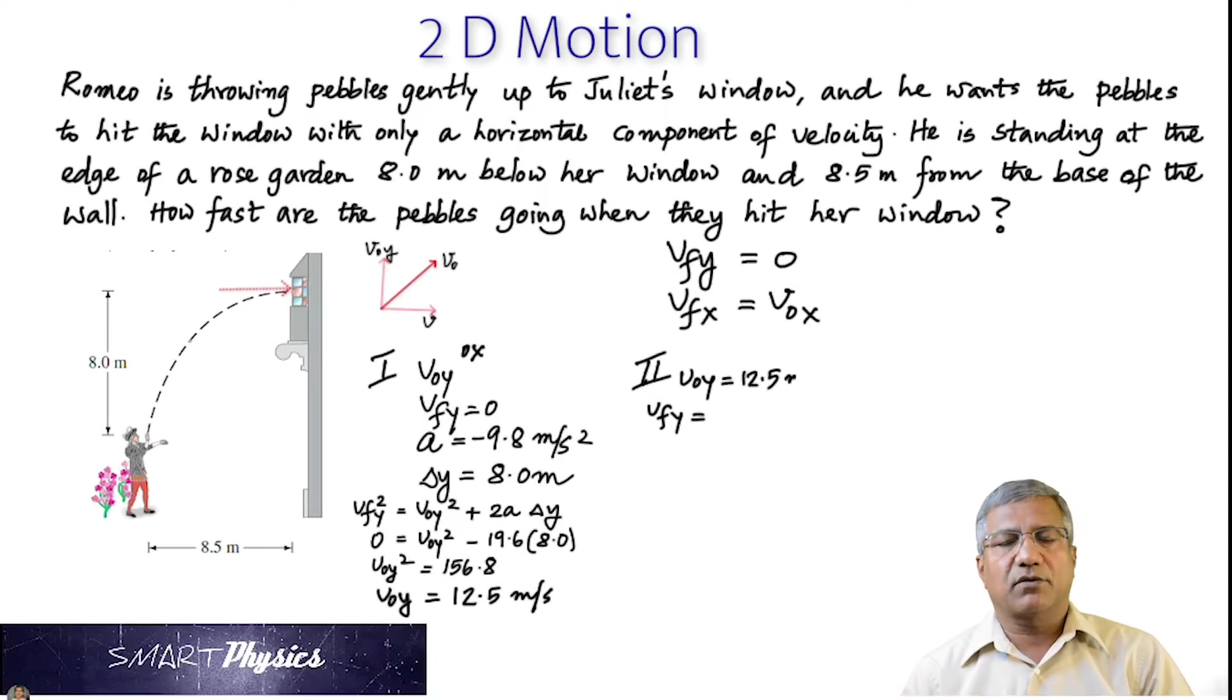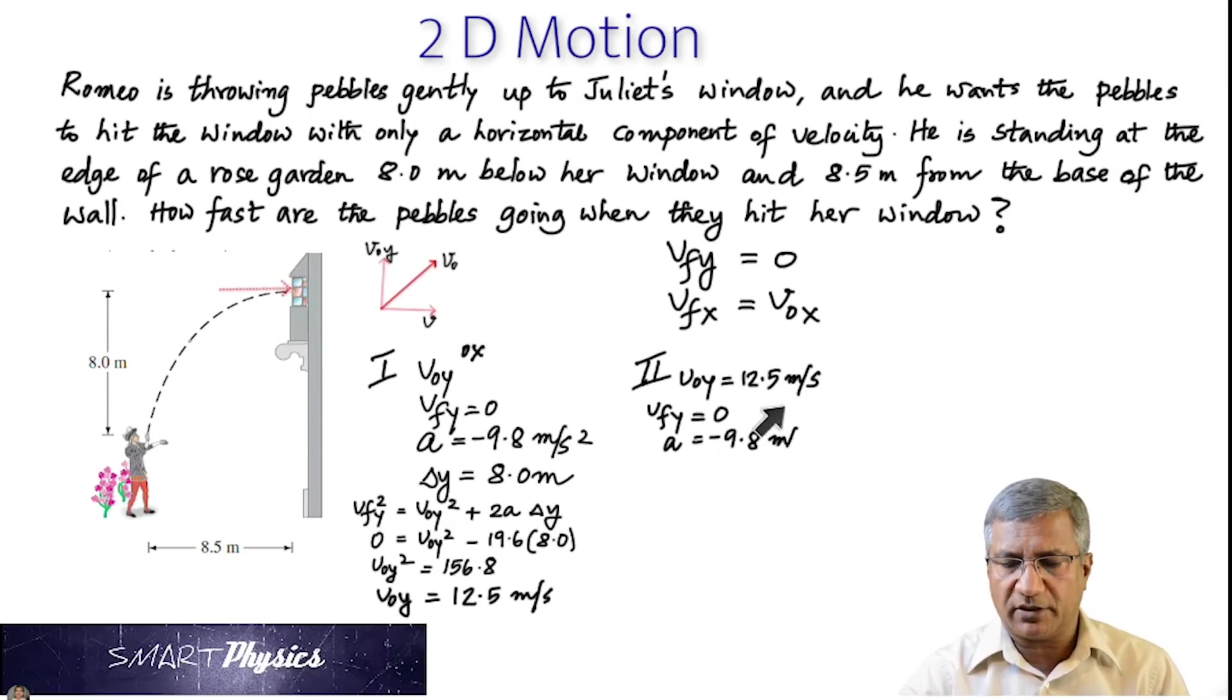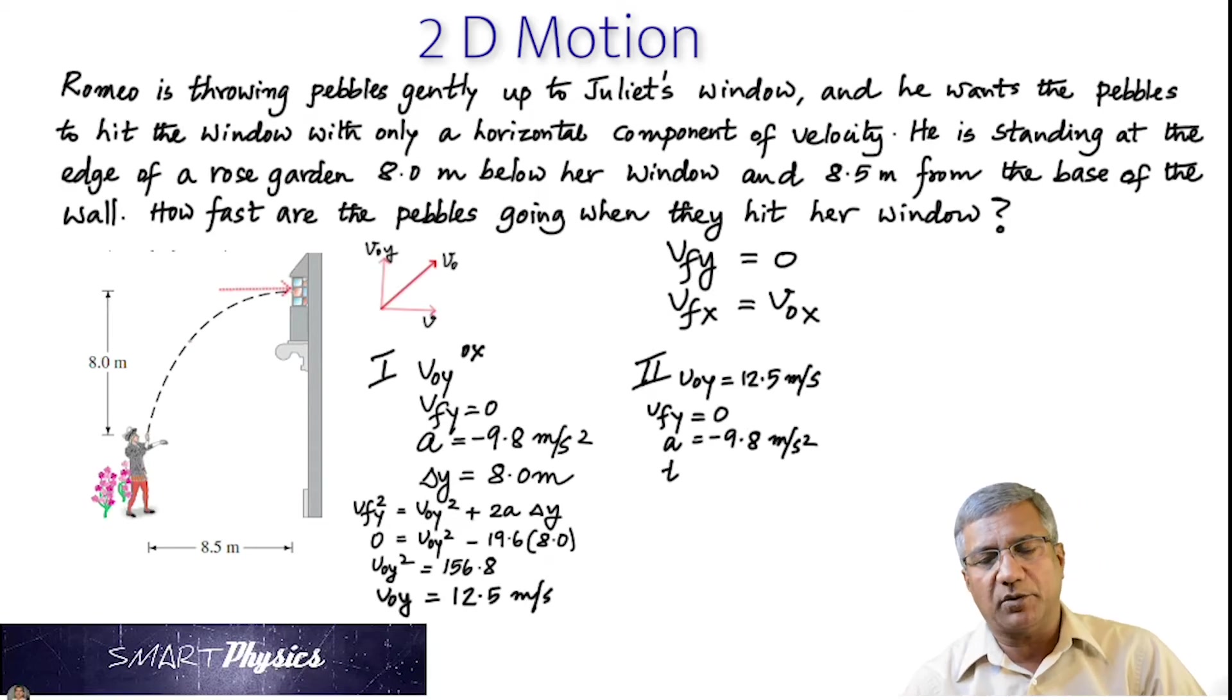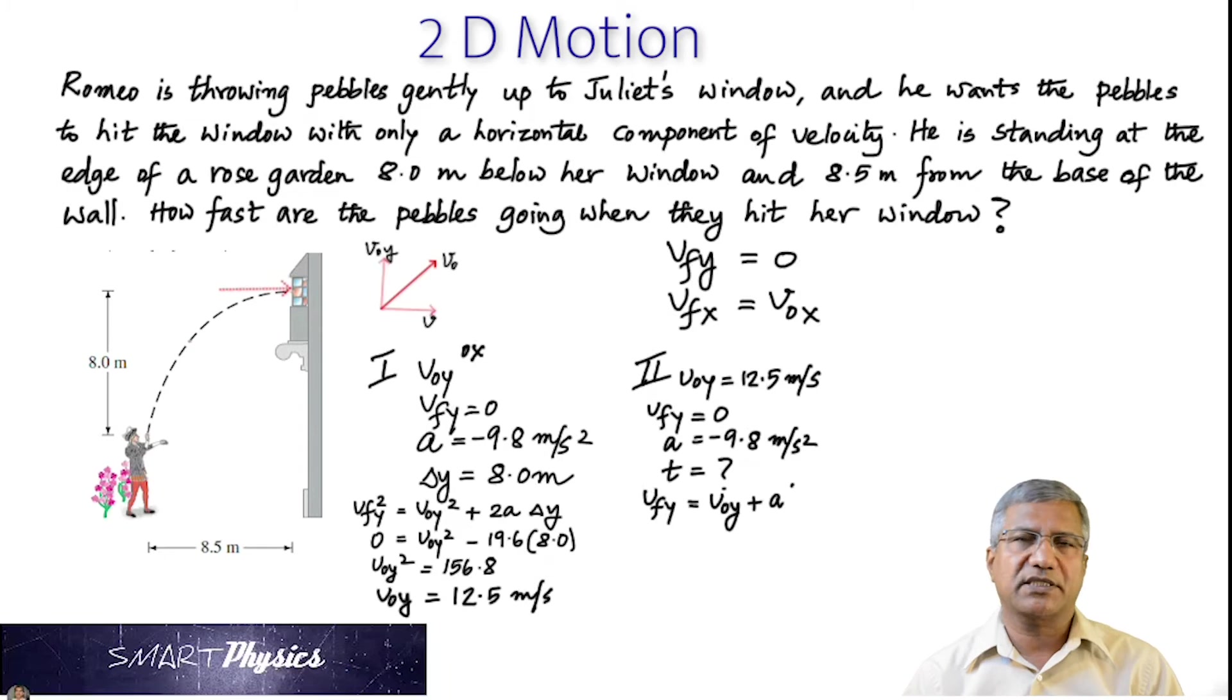The acceleration is negative. We actually got the initial Y velocity is 12.5 meter per second, right? We got it here. So we can use that. The final is 0. Acceleration is negative 9.8 meter per second squared. And we can find the time. And in order to find the time, the equation is VFY is equal to V0Y plus A times T.